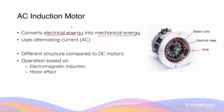As its name suggests, the device uses alternating current, abbreviated as AC, to produce mechanical energy. It has a different structure compared to DC motors, and its operation is based on two important concepts in electromagnetism: electromagnetic induction and the motor effect.